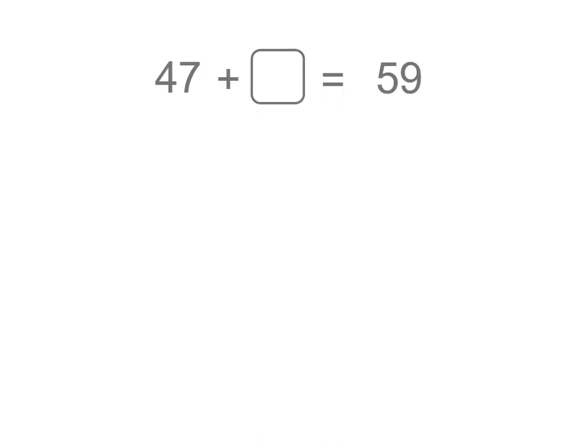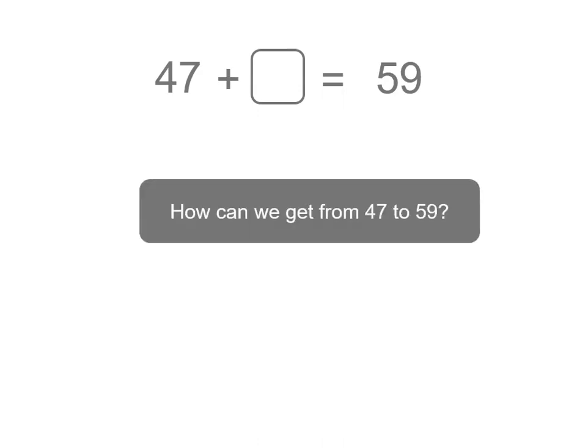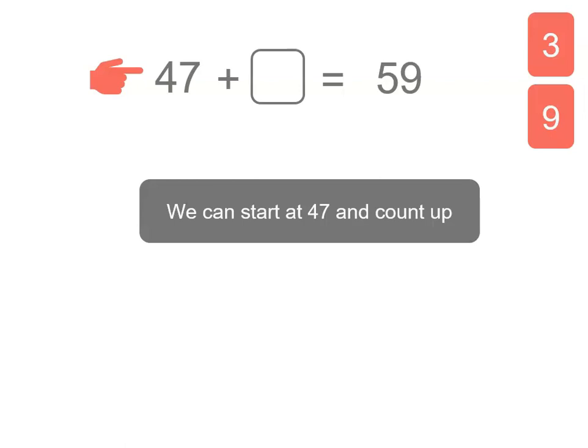This time we're going to try and solve this problem two different ways and find the unknown. 47 plus what number gives me 59? Well, how do we get from 47 to 59? Let's start at 47 and count up. We can add 3 to 47 to get 50, and then add another 9 to get 59.